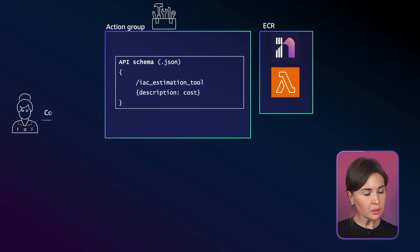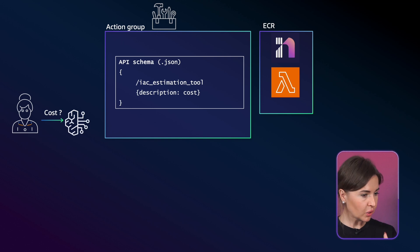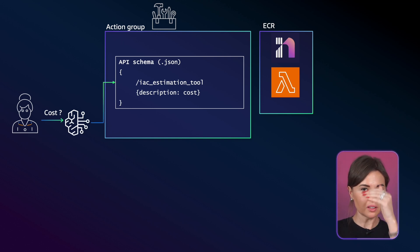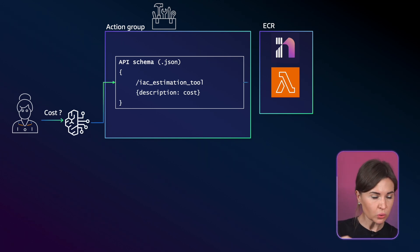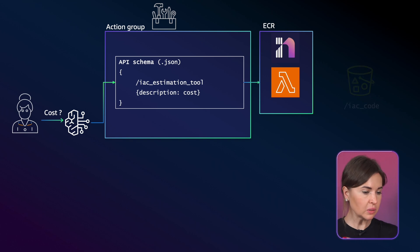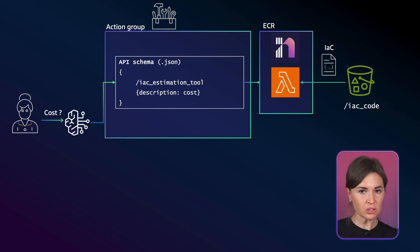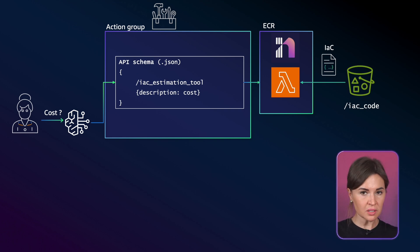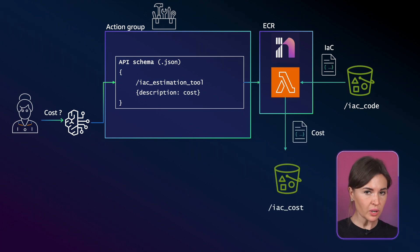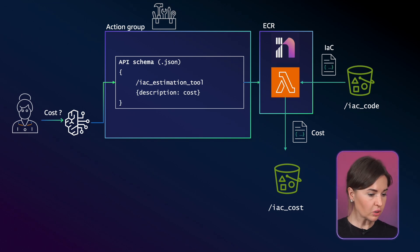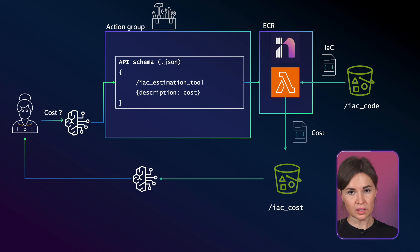Exactly. So you're asking about the cost, it goes to the API schema, then the agent understands which tool to use, and then it will retrieve the information from the bucket — your Terraform file. Based on this, it will generate a new estimate and put it into a new bucket. And then the Bedrock agent — the LLM — will take this information and summarize it in a user-friendly way and respond to you.